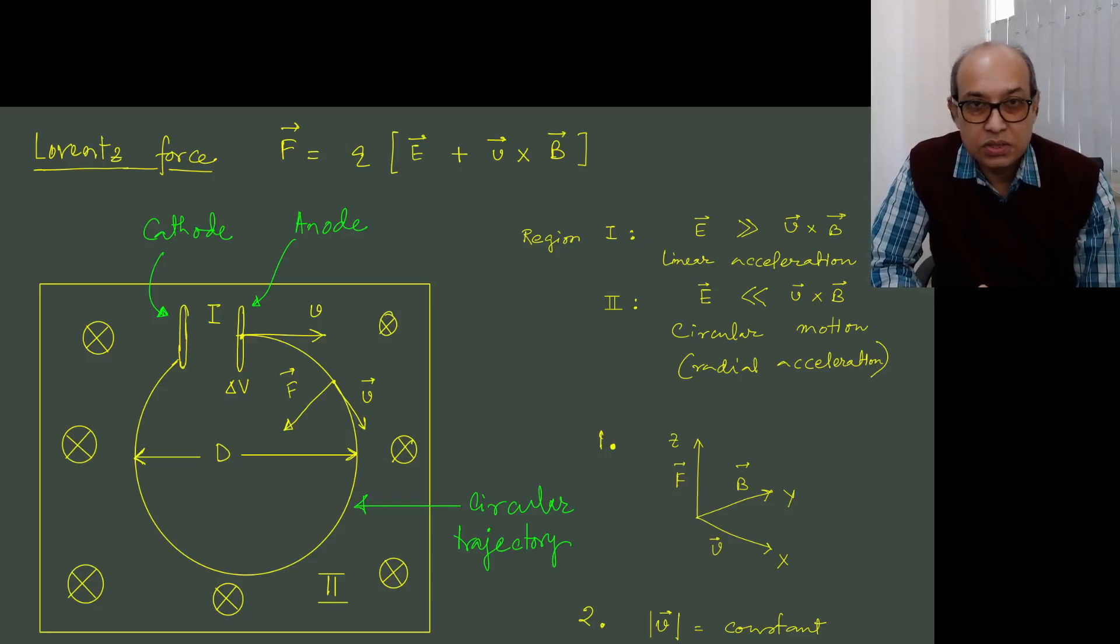Now the Lorentz force on a charged particle is proportional to the magnitude of the charge Q times a sum of two vector quantities. One is the electric field on the charge, the other is the cross product of the velocity of the charge and the magnetic field on that charge.